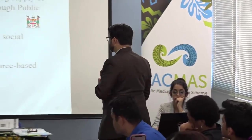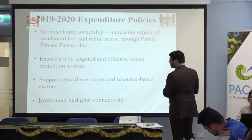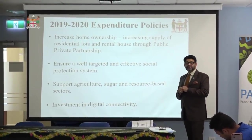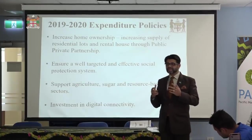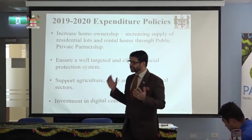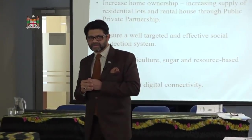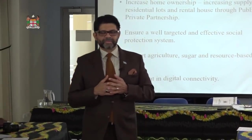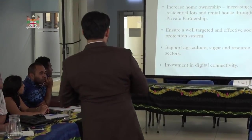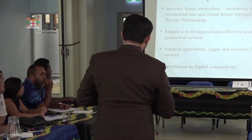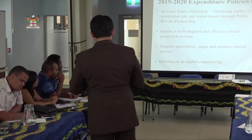Increased home ownership — we are one of the lowest rates of home ownership. We have only a 10 to 12% penetration rate of insurance. These are figures you should know like the ABC if you want to analyze the budget, through public-private partnerships. A well-targeted, effective social protection system is also needed.